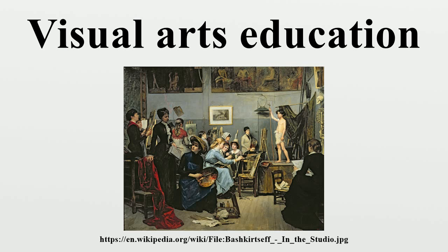Formal art education emerged in the United Kingdom in the early 19th century, motivated in part by a desire to match the quality of design work being done in France. The model initially adopted was that of the German commercial schools. Prince Albert was particularly influential in the creation of schools of art in the UK. Currently in the UK, the art curriculum is prescribed by the government's national curriculum except in public or fee-paying schools. Prince Charles has created the Prince's Drawing School in Hoxton to preserve the teaching of academic drawing.